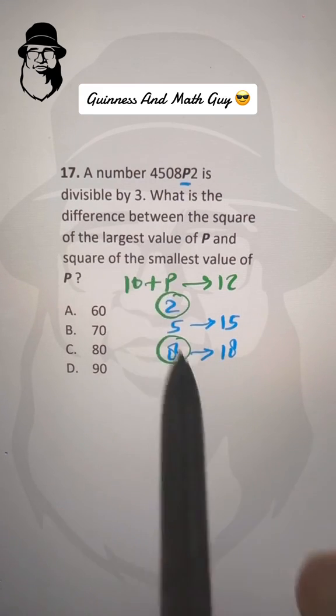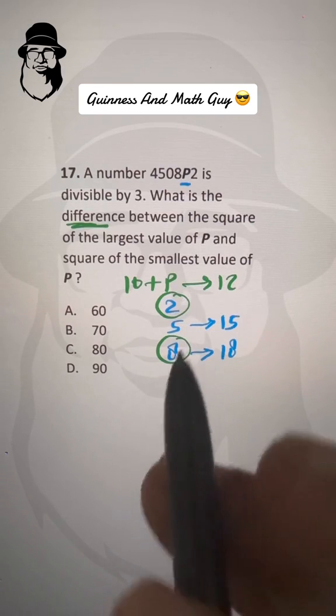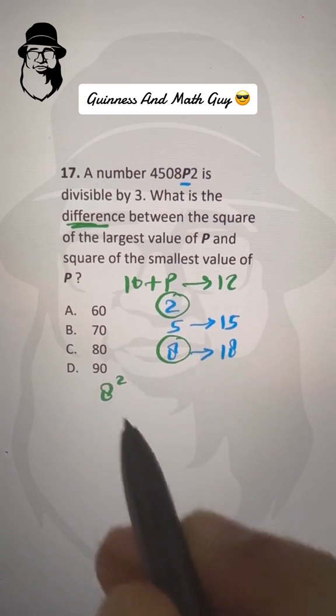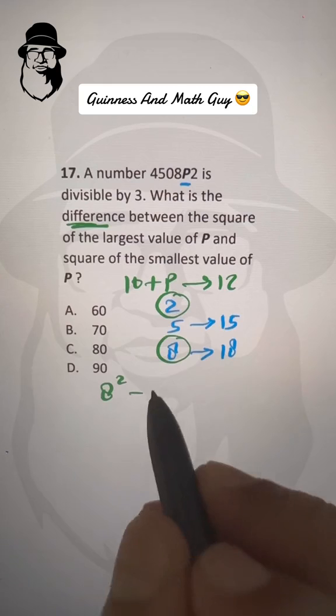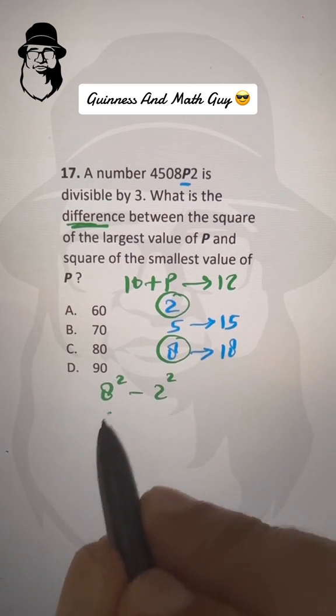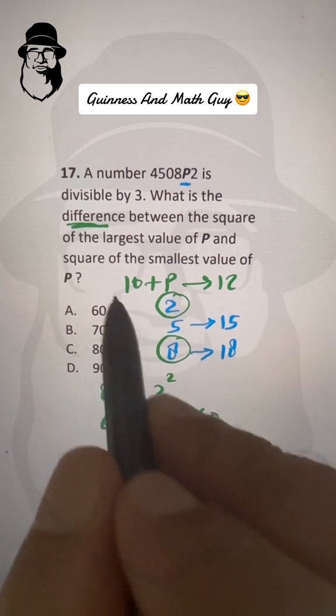And we need the difference of the squares of these two numbers. So 8 squared is 64 minus 2 squared is 4. So 64 minus 4 is 60. That's our answer, Choice A.